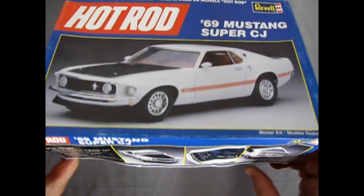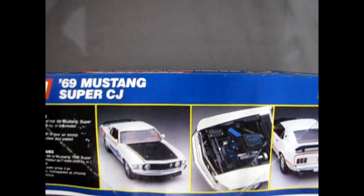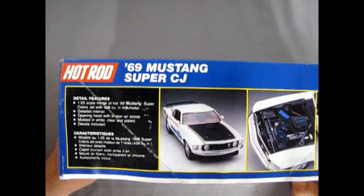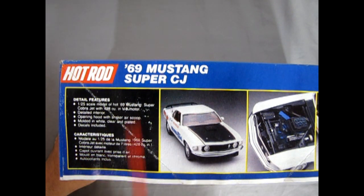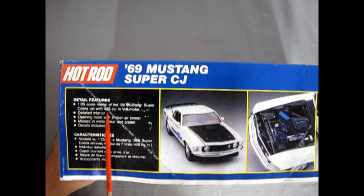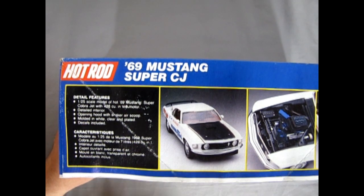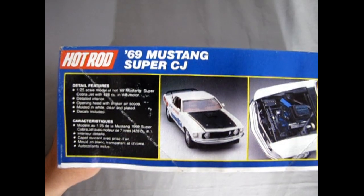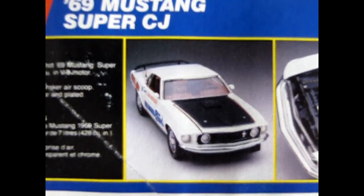So let's just turn this box up on its side and listen to the parts fall. So detailed features: 1/25th scale Cobra Jet 428, detailed interior, opening hood with shaker air scoop, molded in white, clear and plated, and decals are included thank goodness. I don't know why they said that but let's just take a look at how they built the model on the box.